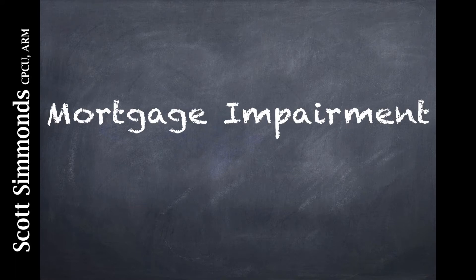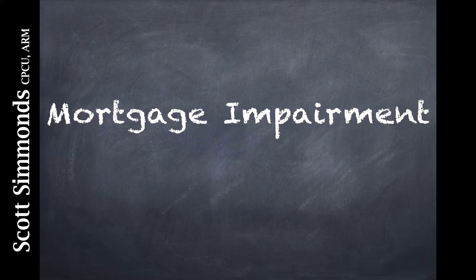Mortgage impairment takes care of mistakes made in the administration of the lending process. The most common issue is a lack of insurance on collateral. For example, a customer fails to buy insurance, they have a fire, then you find out there's no insurance. Coverage can also include errors in the administration of taxes, deed filings, loan guarantees, credit life insurance, and flood zone determination.